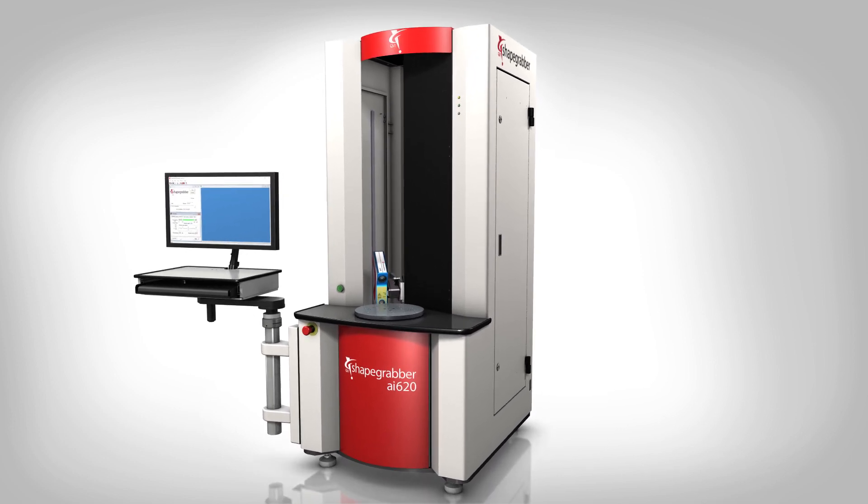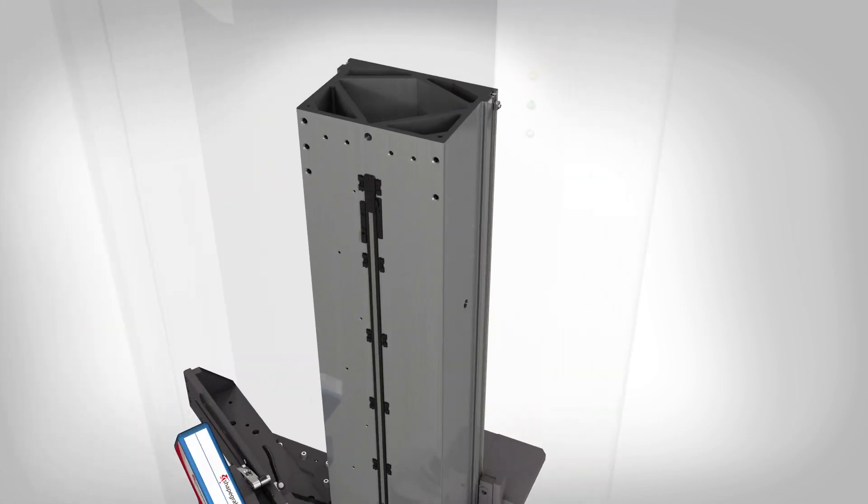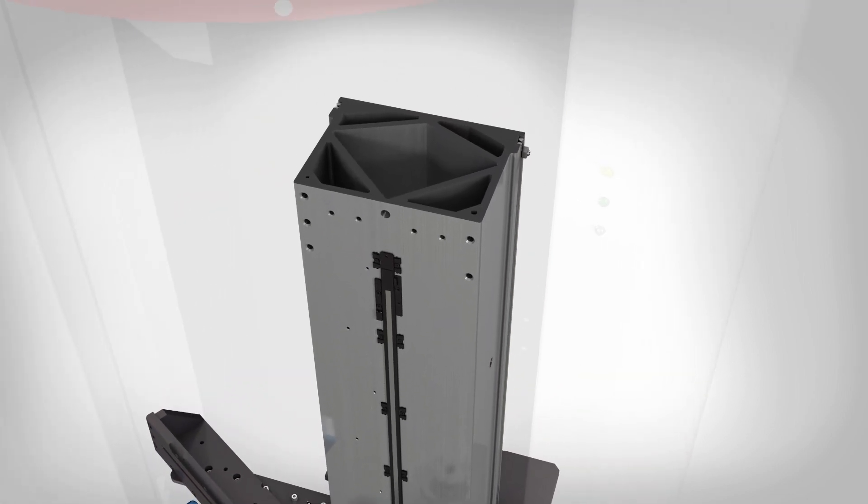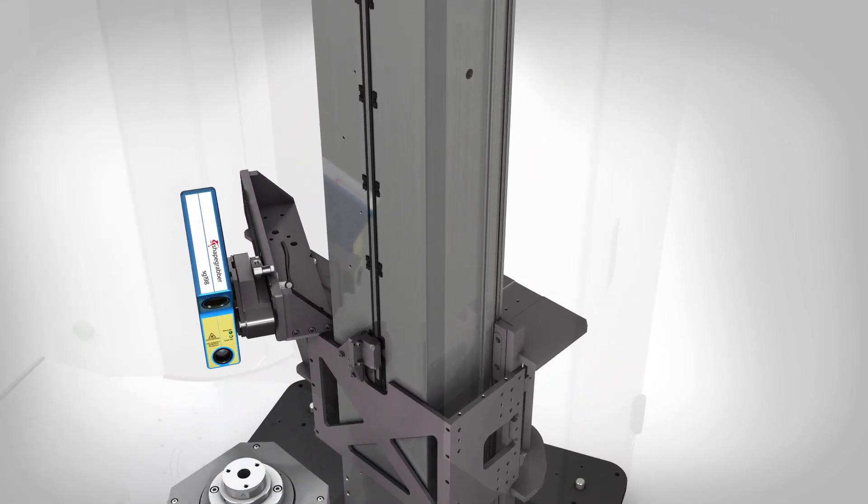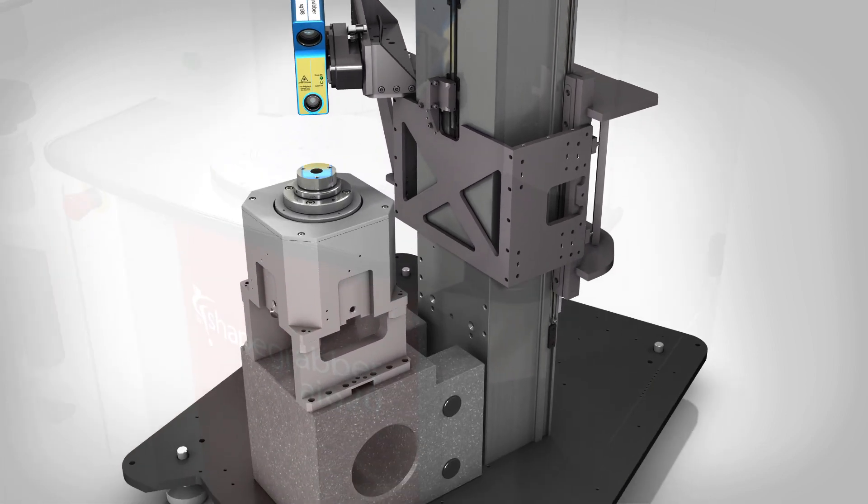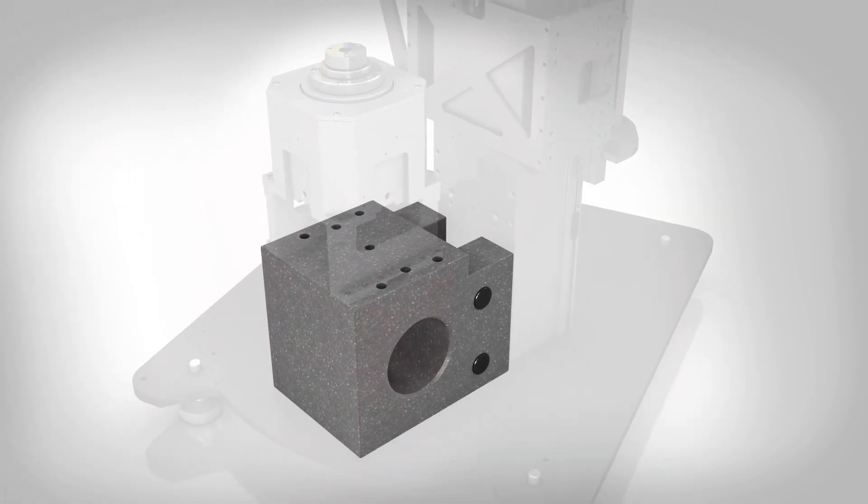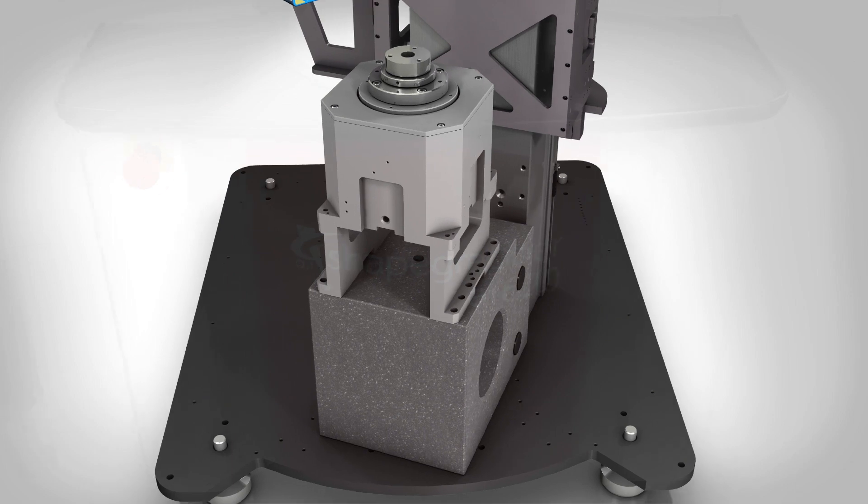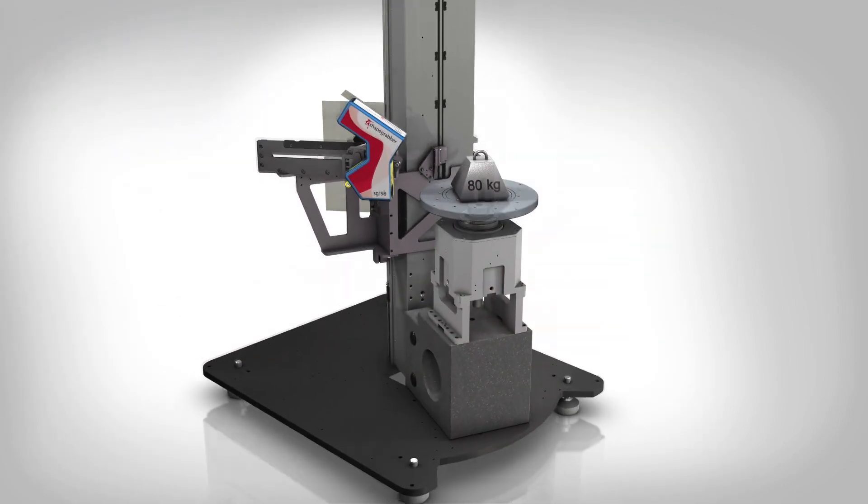The AI620 is constructed from stable components which create a rigid orthogonal structure for precision metrology performance. The heavy granite base isolates vibration and provides a rigid structure for the linear axis and rotary motion system.